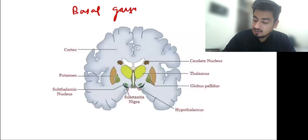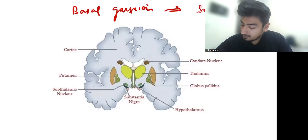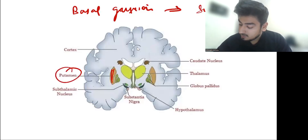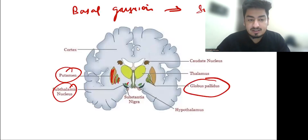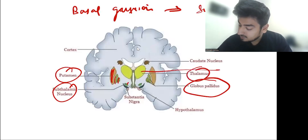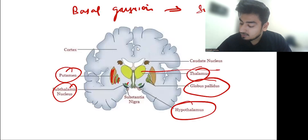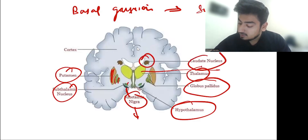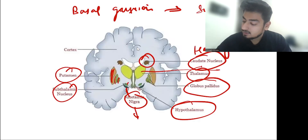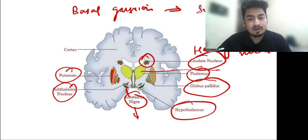Basal ganglia is a group of subcortical nuclei. Looking at the diagram: this is the putamen, this is the subthalamic nucleus, and inside the putamen are two areas — globus pallidus externus and internus. This is the thalamus, here we have the hypothalamus, and this part is the substantia nigra, which is the main culprit. These sub-nuclei coordinate motor movements and help regulate the body.